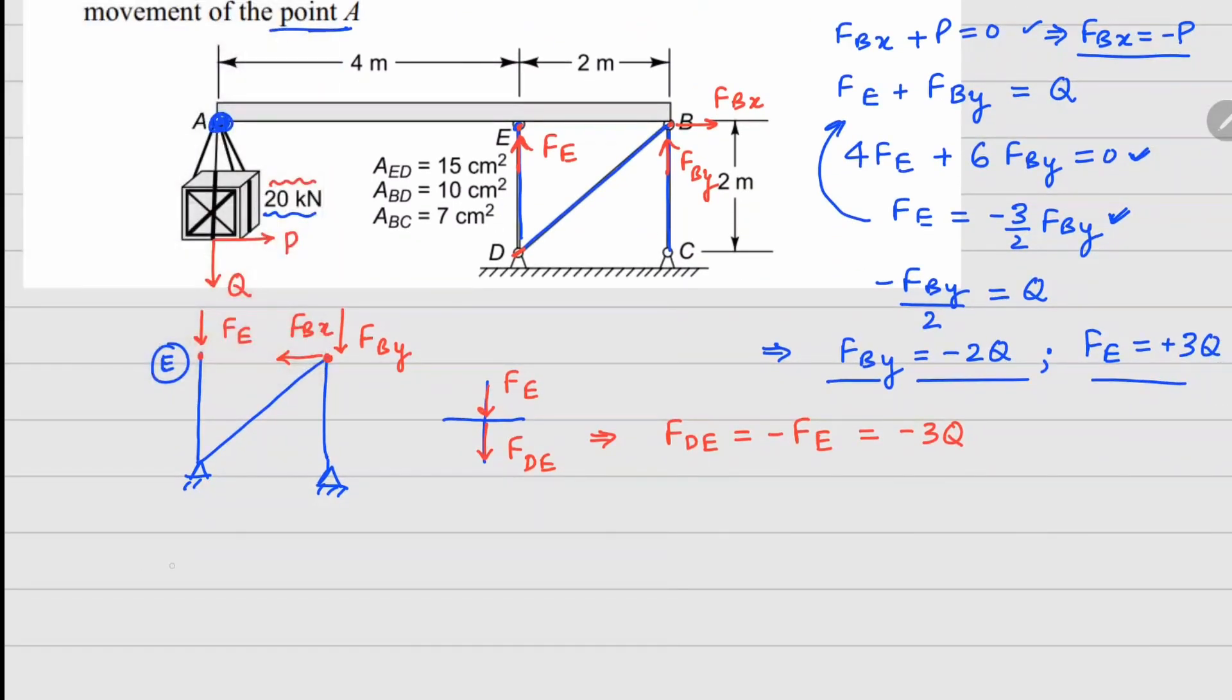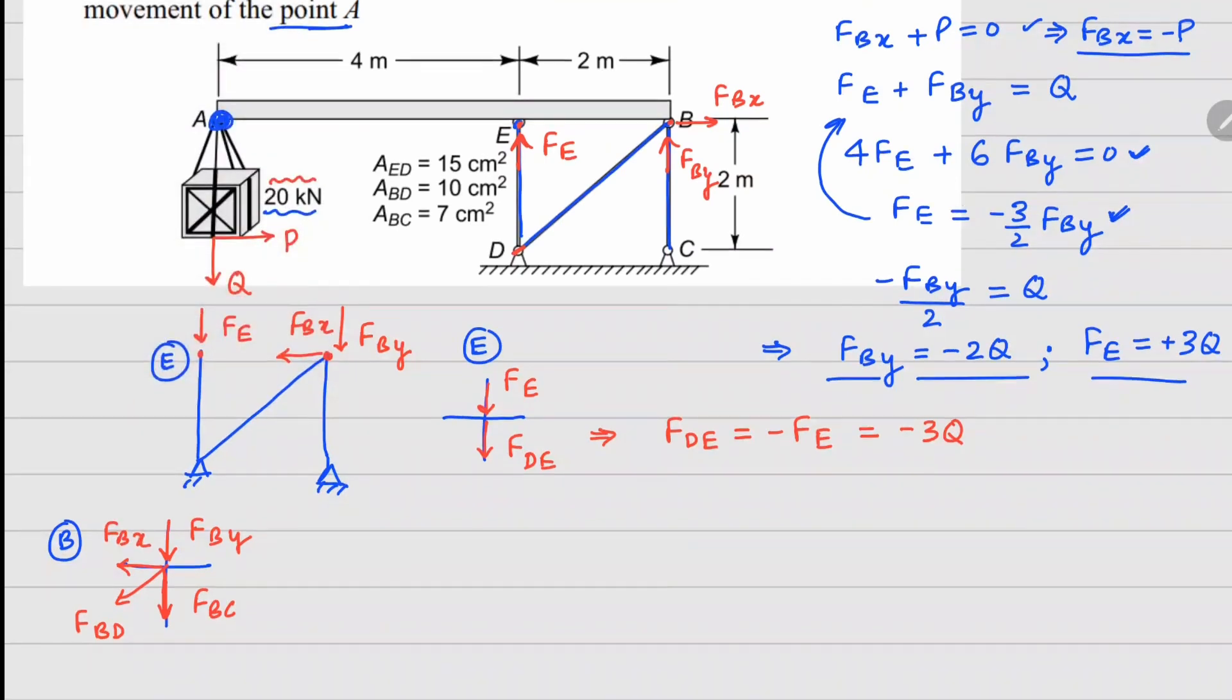Similarly, if I do it for joint B, one force going this way FBC, one going this way FBD, and the reaction forces that are present there. So FBy goes down and FBx goes to the left. Now we can write down the force balance equation.